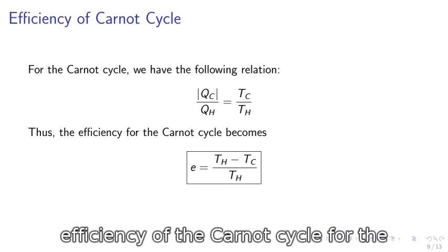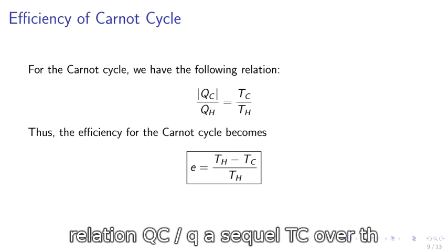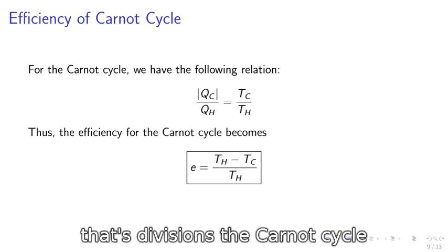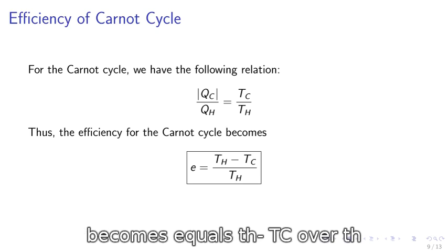Efficiency of the Carnot cycle. For the Carnot cycle, we have the following relation: QC over QH equals TC over TH. Thus, the efficiency of the Carnot cycle becomes e equals TH minus TC over TH.